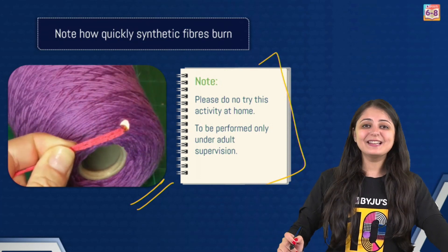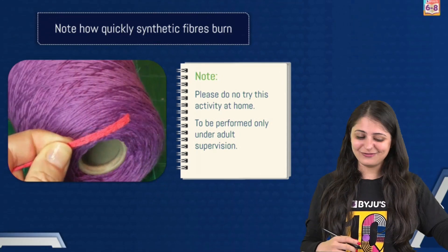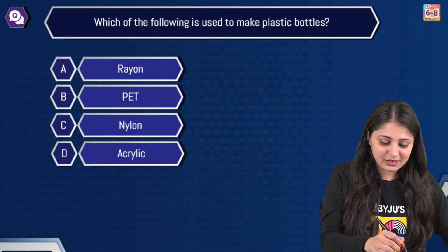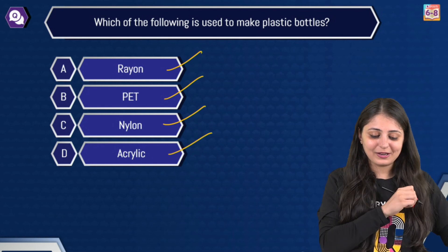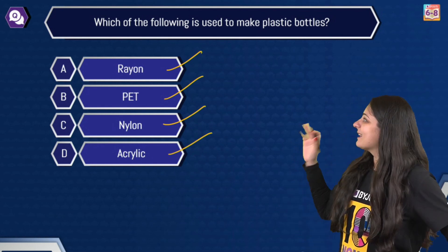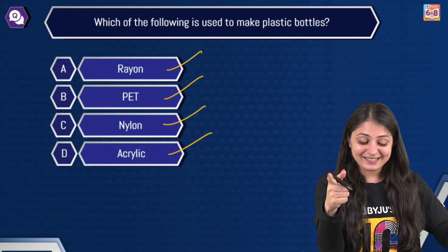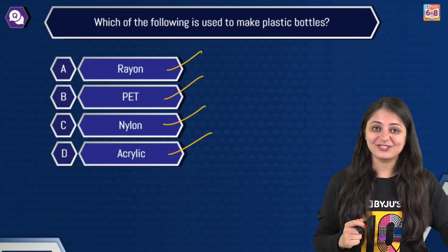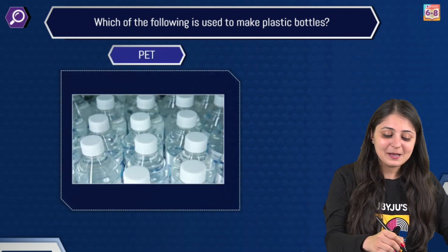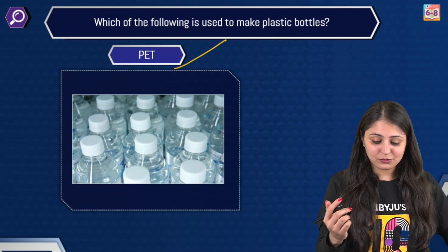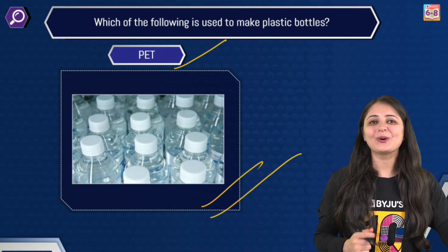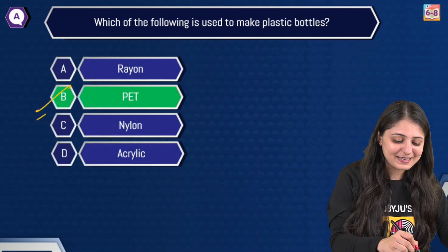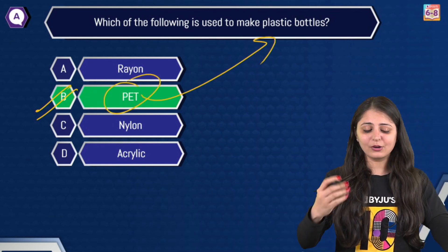Alright, now that you've mastered these two topics, here is a question: which of the following is used to make plastic bottles? Is it rayon, polyethylene terephthalate, nylon, or acrylic? The correct answer is option B — PET, polyethylene terephthalate. It's basically used to make bottles and containers. I hope all of you marked option B as the correct answer — PET bottles, we've all heard about these.